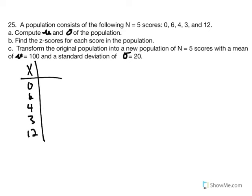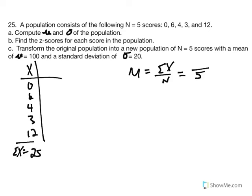The mean equals the sum of x over n. We have five scores. Summing 0, 6, 4, 3, and 12 gives us 25. So 25 divided by 5 gives a mean of 5.